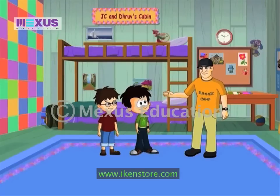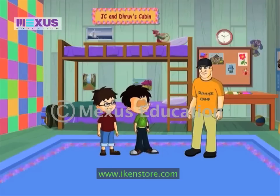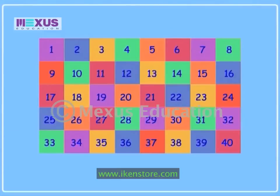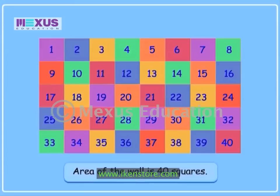So, tell me — how many squares did you use to cover this wall up completely? We used 40 squares. 40 squares have completely covered the space on this wall. This means that the area of this wall is 40 squares.